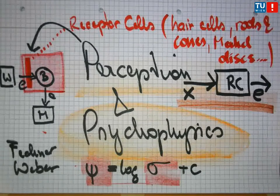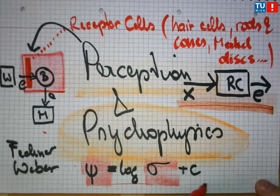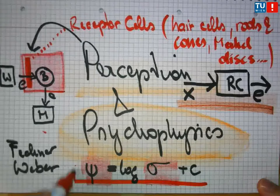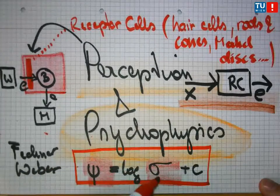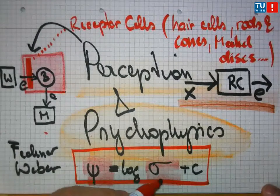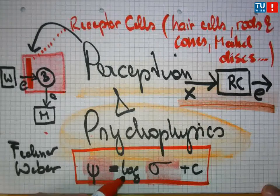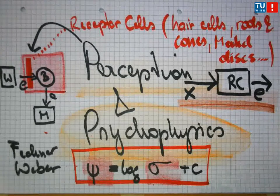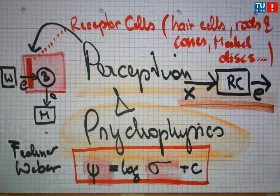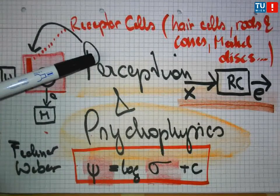The Weber-Fechner law was replaced by Stevens' law, which we are going to investigate in a few minutes. But the fundamental system stayed the same. We still deal with the perception of the outside world—Psi versus Phi—and we are wondering, for different types of stimuli, what the function between the two might be. Often it's logarithmic; sometimes it's not.